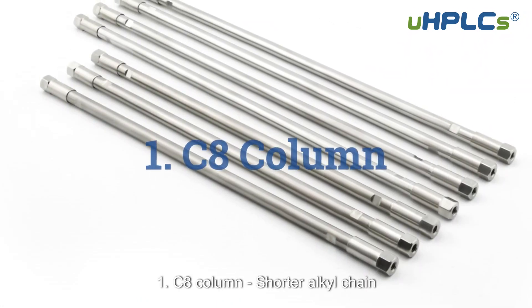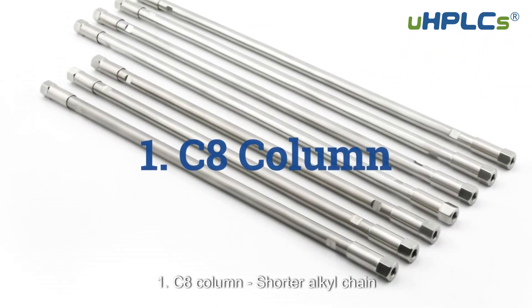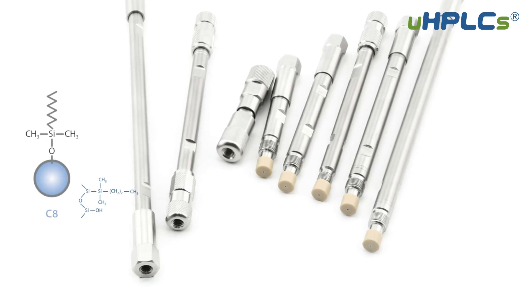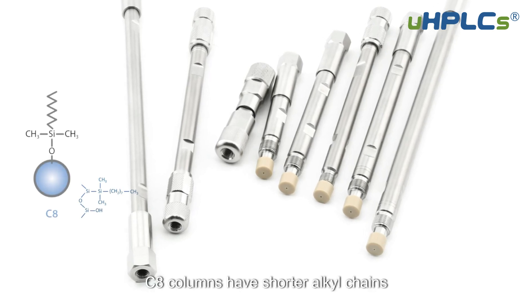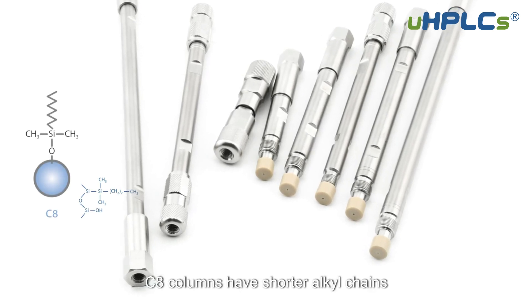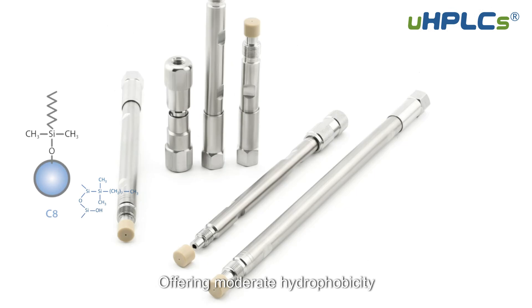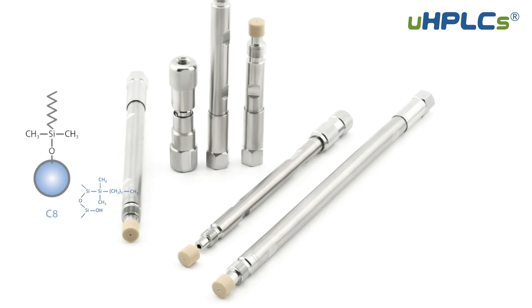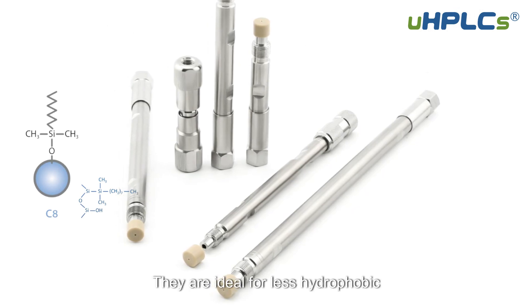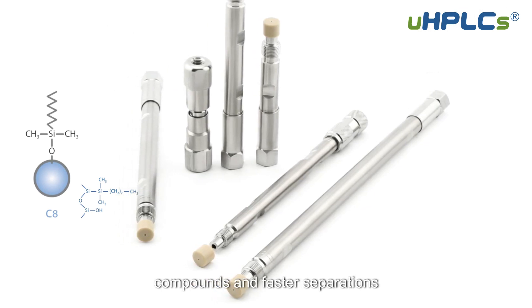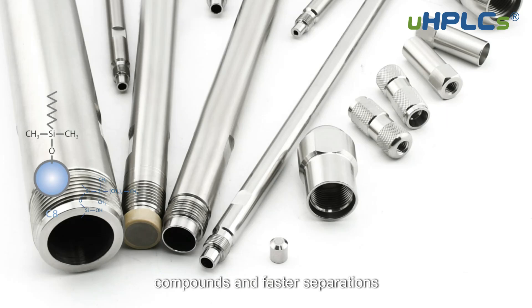1. C8 Column – Shorter Alkyl Chain. C8 columns have shorter alkyl chains, offering moderate hydrophobicity. They are ideal for less hydrophobic compounds and faster separations.